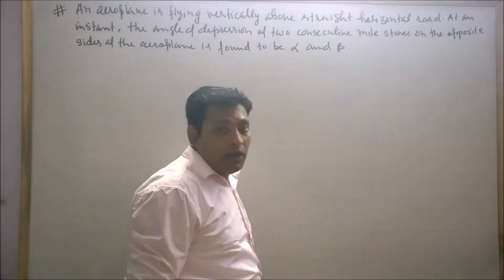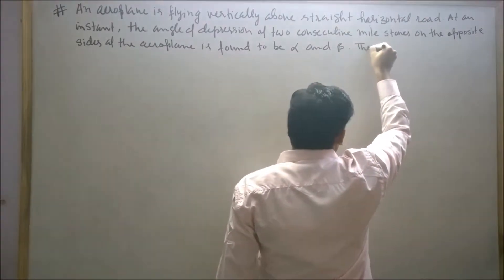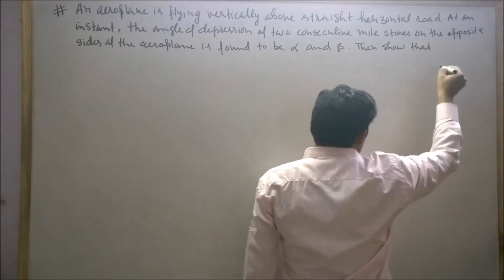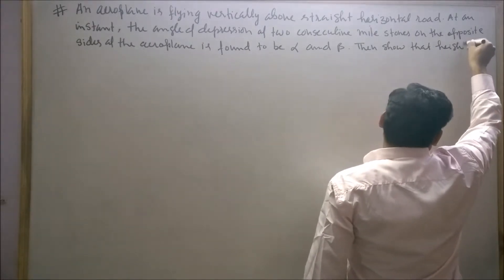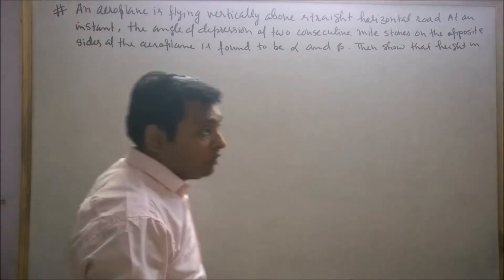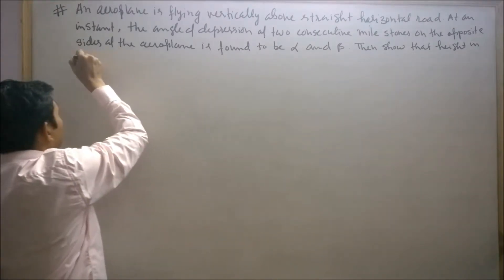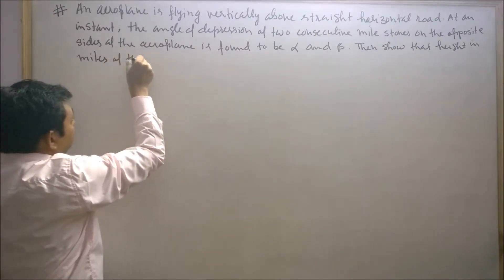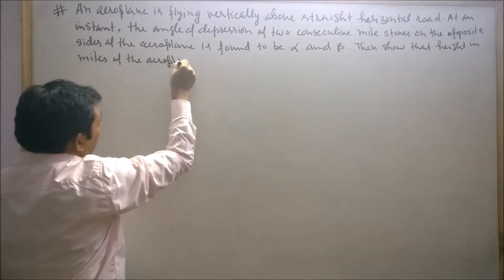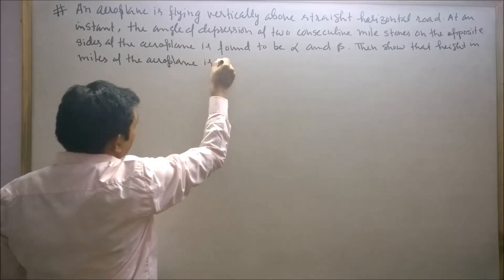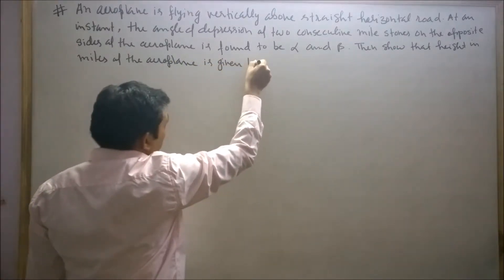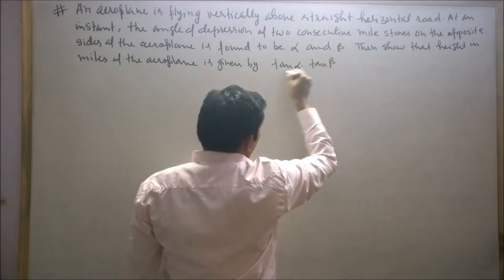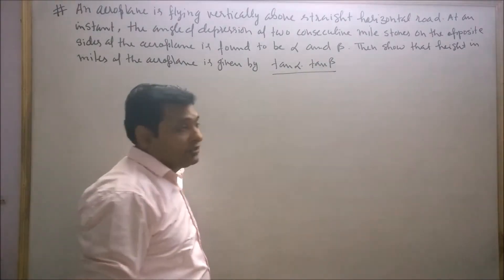Then show that the height in miles of the aeroplane is given by tan alpha into tan beta upon tan alpha plus tan beta.